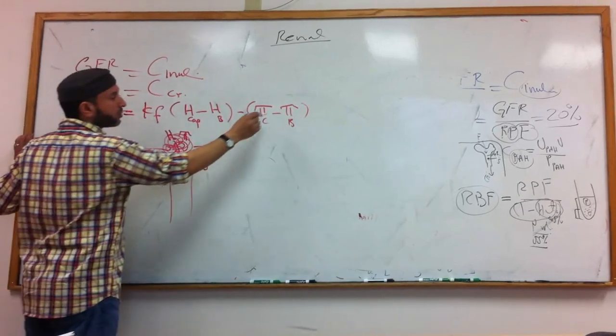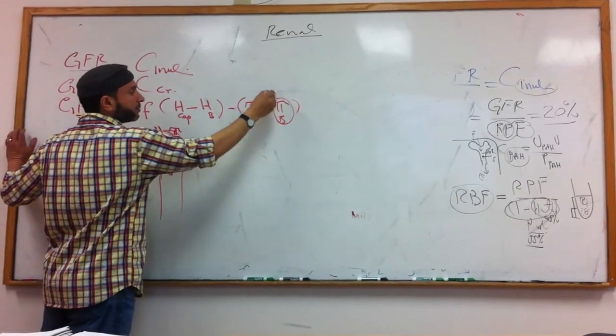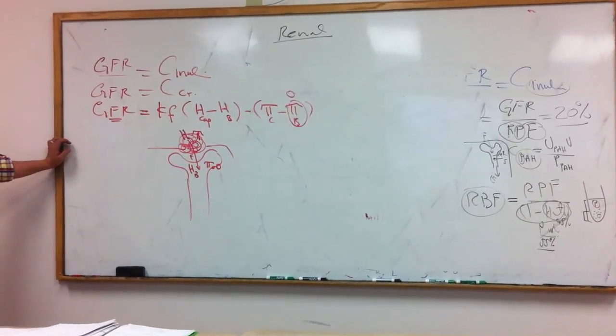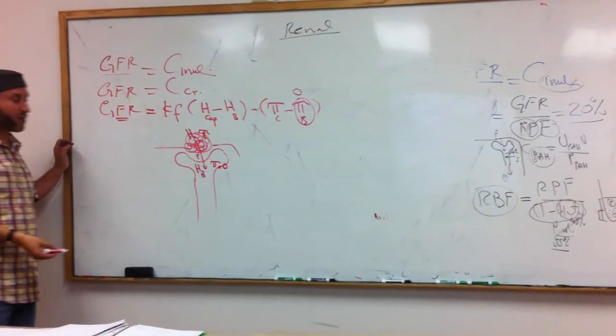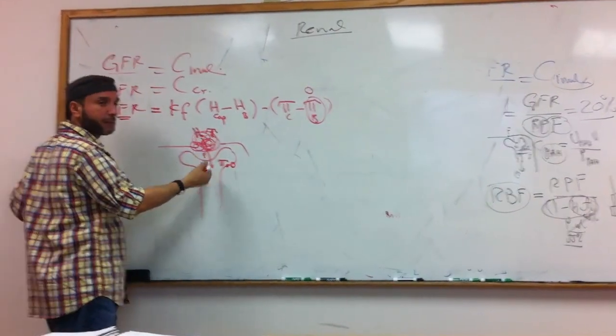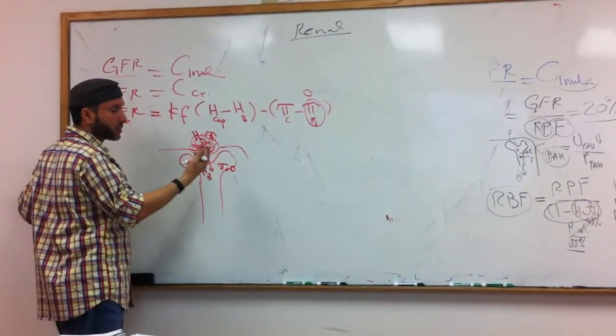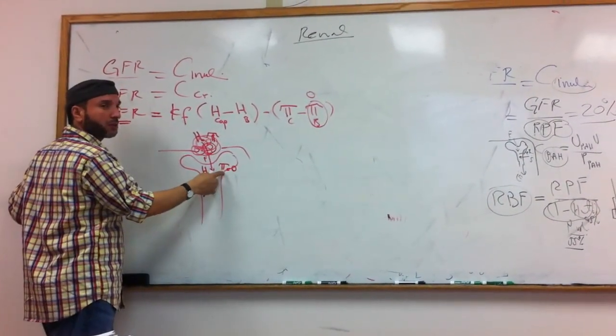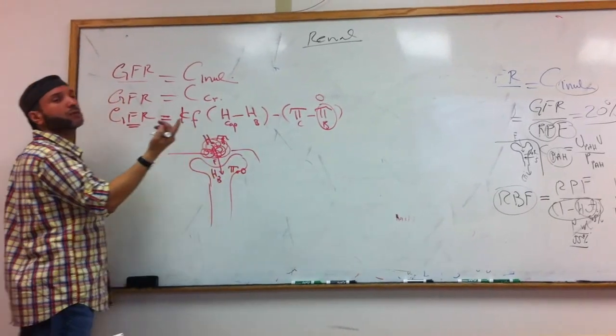Why is it almost zero? Because we don't have proteins in Bowman's capsule. We don't have proteins there. So the oncotic pressure, or osmotic pressure, in Bowman's is almost zero.